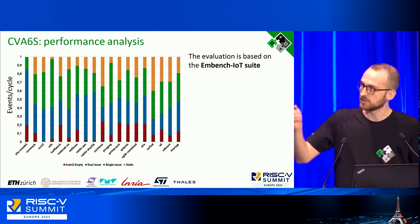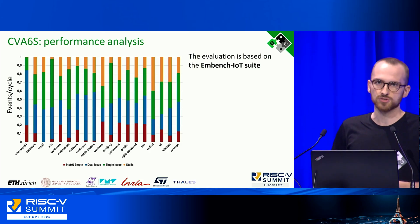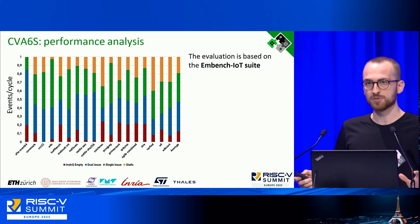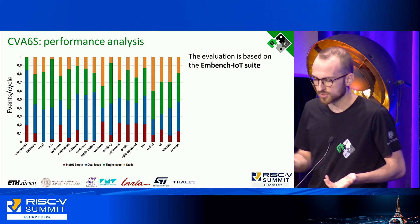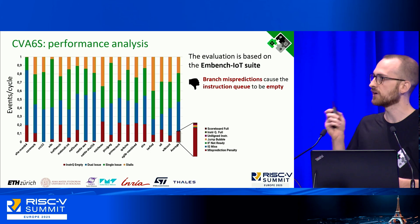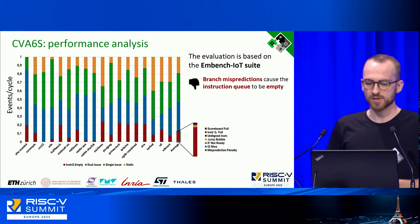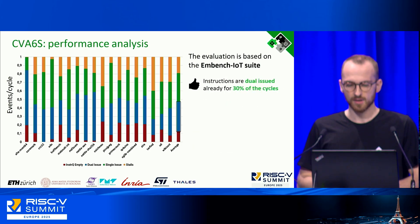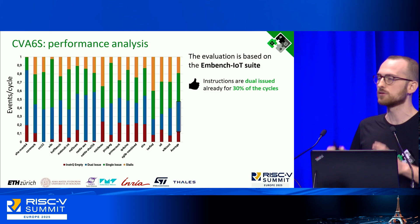The events monitored are: instruction queue empty (the red bar), meaning the front end has no instructions to feed the pipeline; cycles where we are dual-issuing, which is the optimal case; cycles where we are single-issuing, meaning something is preventing full pipeline utilization; and cycles where we are completely stalled. The main reason for the instruction queue being empty is branch misprediction, so the obvious answer is to provide a better branch predictor.